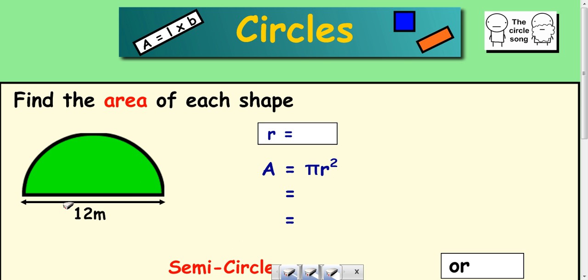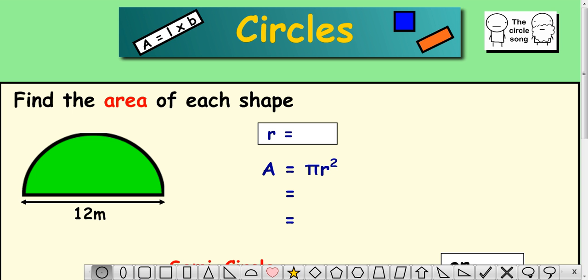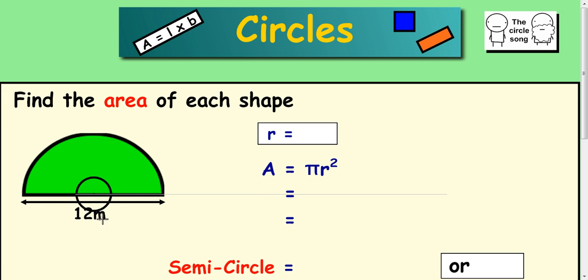Now, the first problem is that in the formula for the area of a circle, we use radius and not diameter. Now, if you imagine the full circle, then the 12 is not the radius, the 12 is the diameter. So the first thing I'm going to do here is calculate the actual radius, which is half of 12, which is 6.